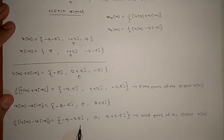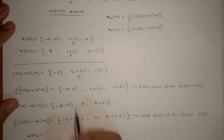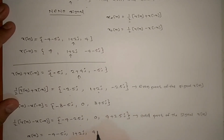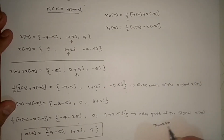So the odd part of the signal is {minus 4 minus 2.5j, 0, 4 plus 2.5j} and the even part is {minus 2.5j, 1 plus 2j, minus 2.5j}. If you add these two, you get back the original signal: minus 4 minus 5j, 1 plus 2j, and 4. You can verify this. Got it? So this shows the even part and odd part of the signal — if you add them, you get back the original signal. Thank you.